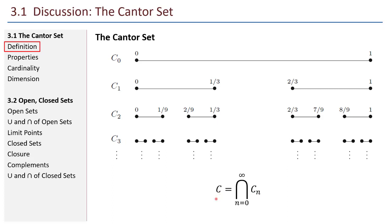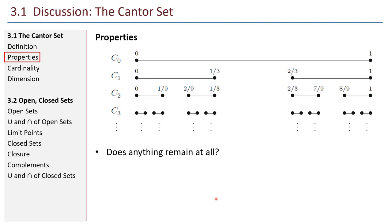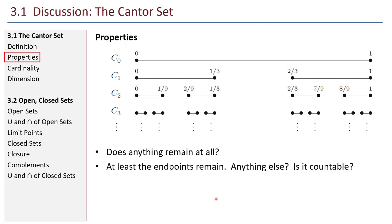One question you might ask is: does anything remain at all? If you keep removing middle thirds, will you actually just remove everything? The answer is no. At least the endpoints remain. Like one-third — we know that one-third is in this set, and one-third will continue to remain in the set forever. Seven-ninths is also in the set and will remain forever.